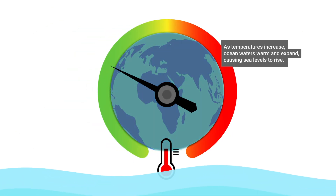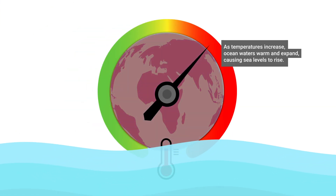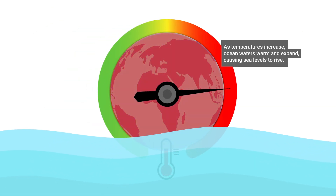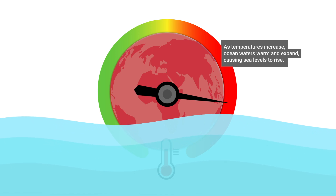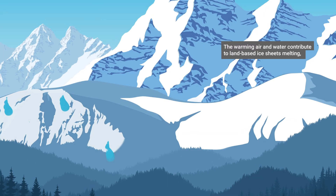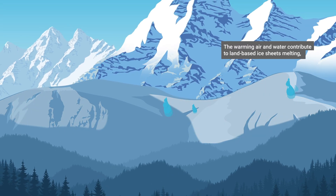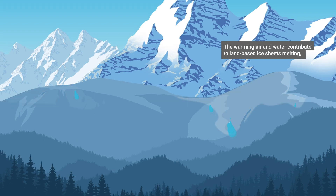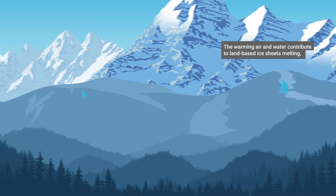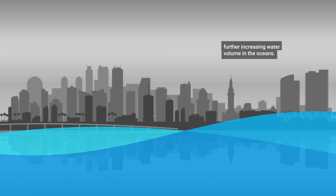As temperatures increase, ocean waters warm up and expand, causing sea levels to rise. The warming air and water contribute to land-based ice sheets melting, further increasing water volume in the oceans.